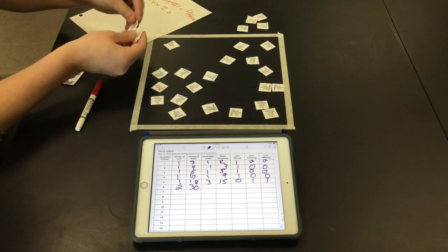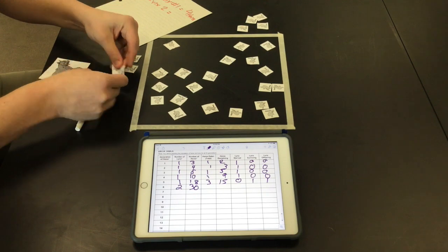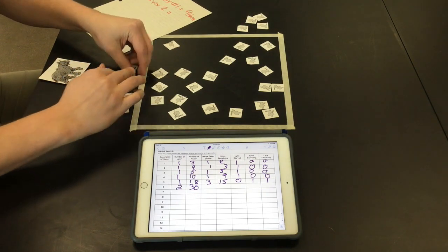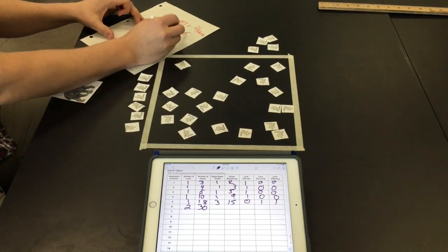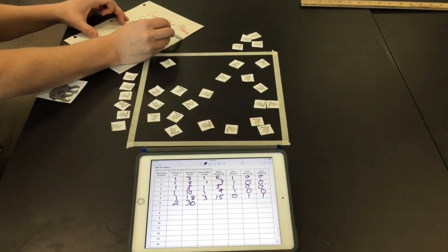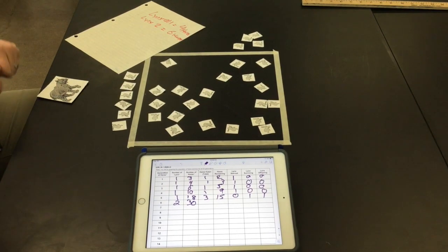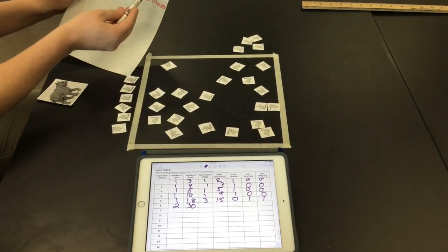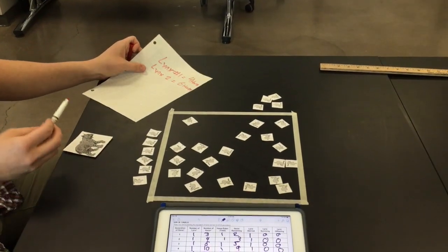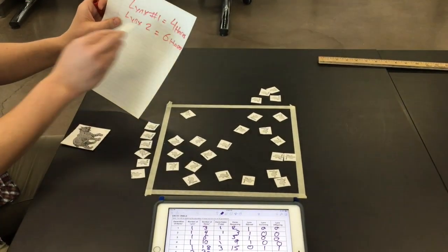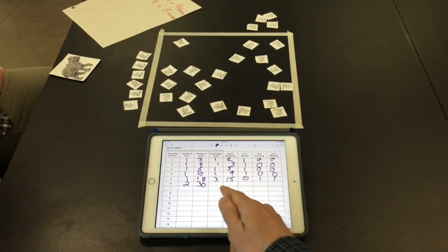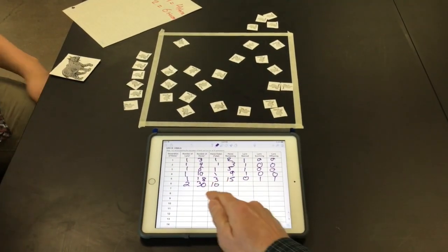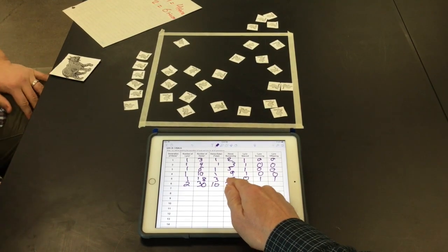In this case, lynx number two collected six hairs. So each one of these lynx, lynx number one caught four hairs, it's going to make one lynx offspring. Lynx number two caught six, that's going to be two for that lynx. So we want to calculate those totals onto our data sheet and then reset for the next population.